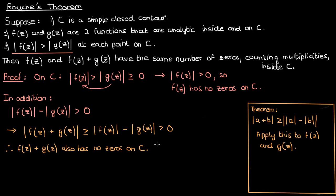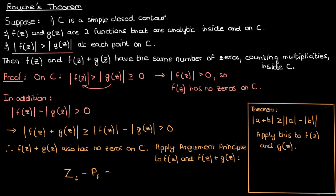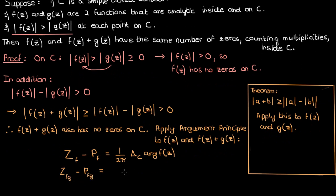Now that we've established that f and f plus g have no zeros on the contour C, combined with the fact that f and g are analytic inside and on C and that C is a simple closed contour, we've satisfied all the prerequisites for the argument principle. Applying the argument principle to f gives: Z_f minus P_f equals 1 over 2π times the change in argument of f over C. Applying it to f plus g gives: Z_{f+g} minus P_{f+g} equals 1 over 2π times the change in argument of f plus g over C.